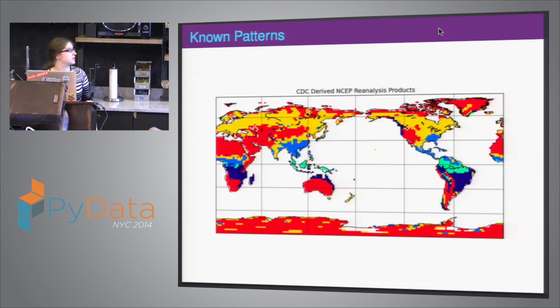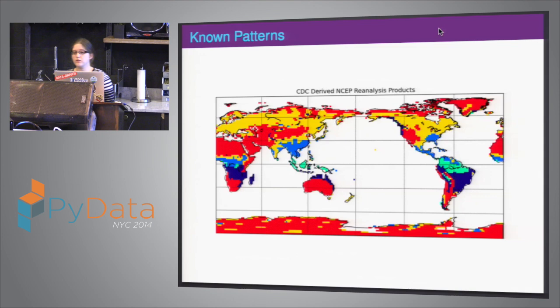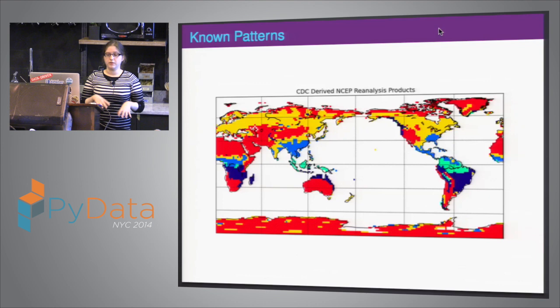We'll confirm this by looking at the cluster means. When we look at our cluster means, yeah, deserts are pretty dry. We have a lot of rain in Indonesia and the top of South America. So we'd want to go back to Wikipedia and confirm: is that where we usually see the largest rainfall? Because you need to be able to reliably tell people that you read your data correctly and know what your data is doing.